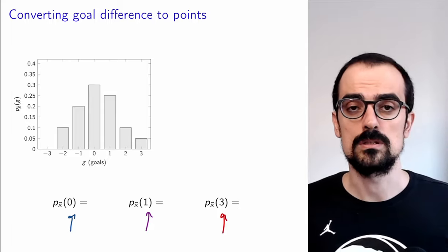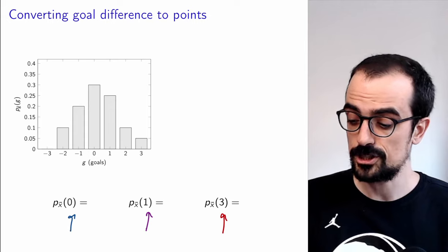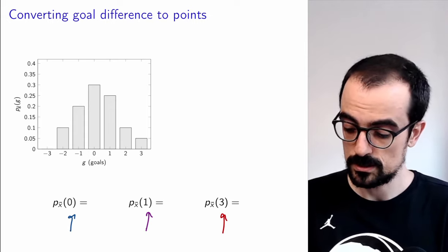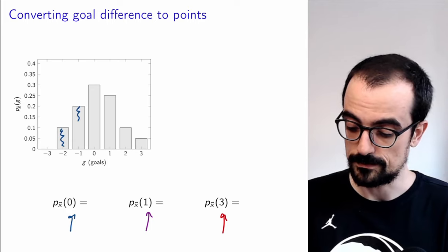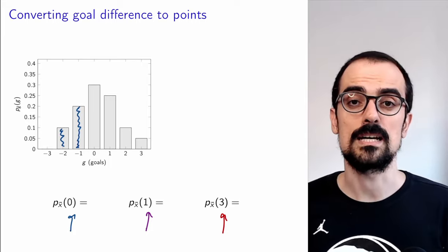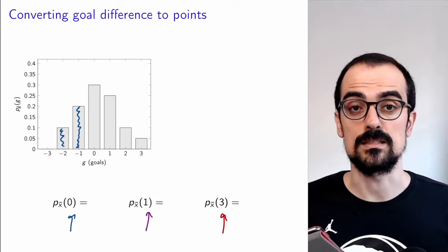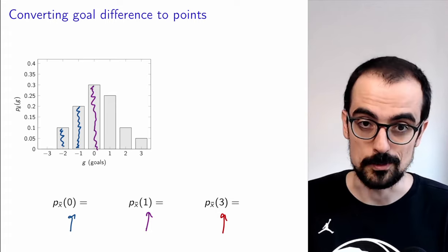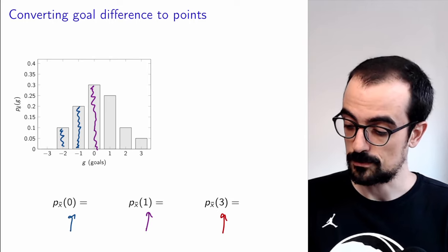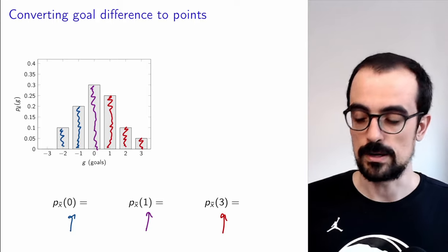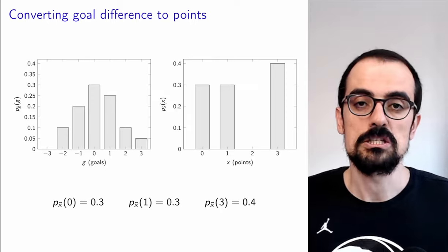So how do we compute this PMF? By definition, the PMF at 0 is the probability that the team loses, which occurs if there's a negative goal differential, so we have to add 0.1 and 0.2. The probability that the team obtains 1 point is the probability that the team ties, so the goal differential is 0, giving probability 0.3. And the probability that the team wins requires considering all possibilities — goal differentials of 1, 2, or 3 — and we add all that up to get 0.4.